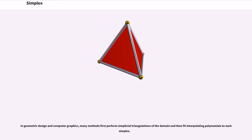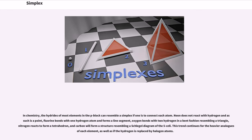In geometric design and computer graphics, many methods first perform simplicial triangulations of the domain and then fit interpolating polynomials to each simplex. In chemistry, the hydrides of most elements in the p-block can resemble a simplex if one is to connect each atom. Neon does not react with hydrogen and as such is a point. Fluorine bonds with one hydrogen atom and forms a line segment. Oxygen bonds with two hydrogen in a bent fashion resembling a triangle. Nitrogen reacts to form a tetrahedron, and carbon will form a structure resembling a Schlegel diagram of the 5-cell. This trend continues for the heavier analogs of each element, as well as if the hydrogen is replaced by halogen atoms.